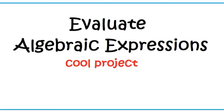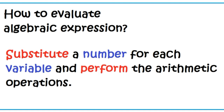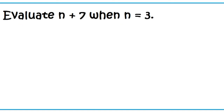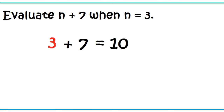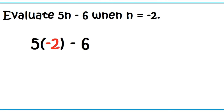Evaluate algebraic expressions. How to evaluate algebraic expressions: substitute a number for each variable and perform the arithmetic operations. Evaluate N plus 7 when N equals 3. Substitute 3 for N, then add 7. 3 plus 7 equals 10. Evaluate 5N minus 6 when N equals negative 2. Substitute negative 2 for N. Multiply negative 2 to 5 first before subtracting 6.